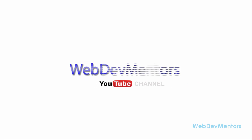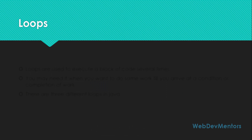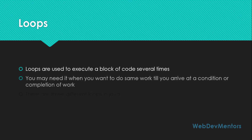Hello and welcome to WebDementors YouTube channel. You are watching Programming in Java series for beginners. In this video we're going to see about loops in Java. Loops are used to execute a block of code several number of times, and you may need them when you want to do some work till you arrive at a condition or the completion of the work.